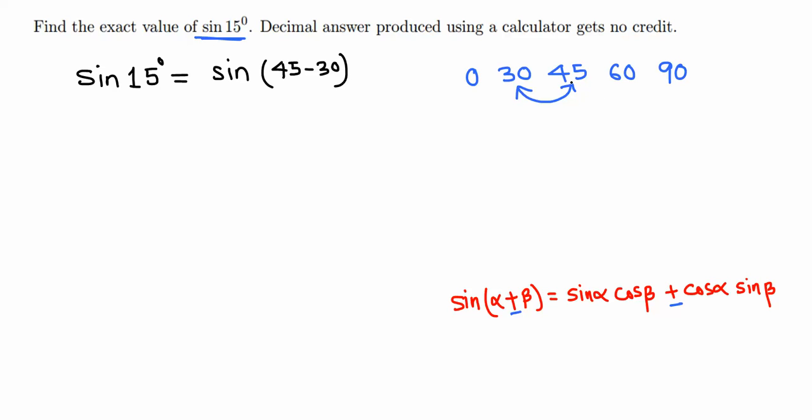60 minus 45 is also 15, we could have done that. Now this is like sine alpha minus beta, but this is not simply sine 45 minus sine 30. That's not true. The sine is not a standalone factor that we can distribute.